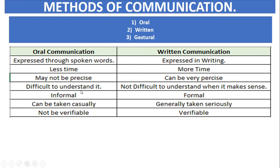Oral communication can be difficult to understand because everyone's speaking and understanding differs. Oral communication can be informal or casual, while written communication is more formal and serious. For example, if a teacher verbally tells you there will be a unit test next week, you may take it casually. But if you receive a written date sheet or notice, you take it seriously — that is written communication.